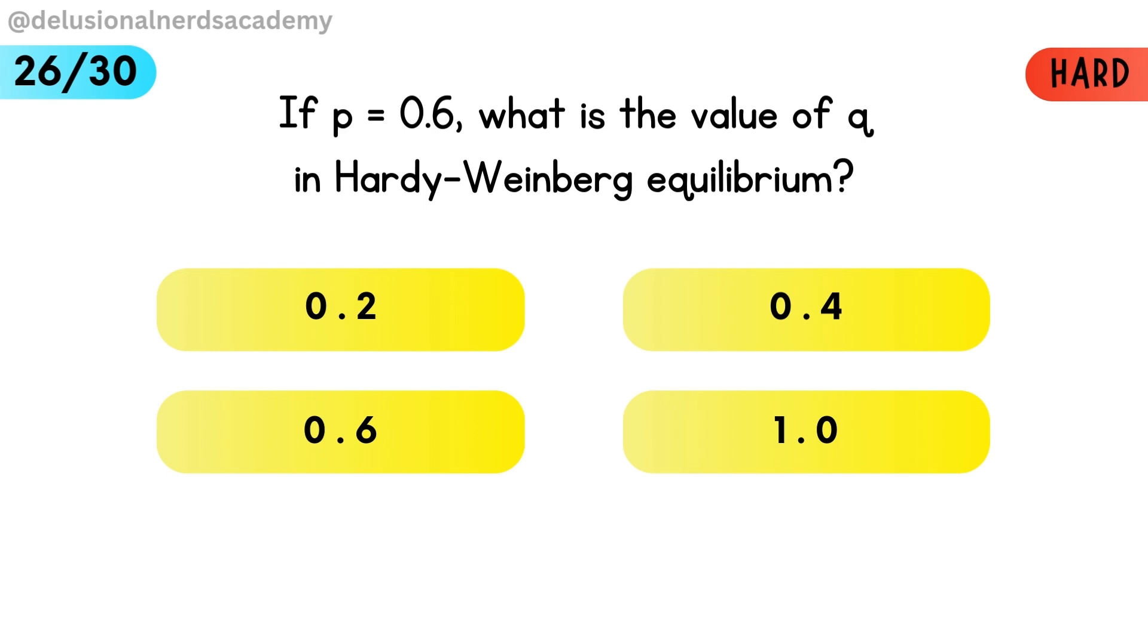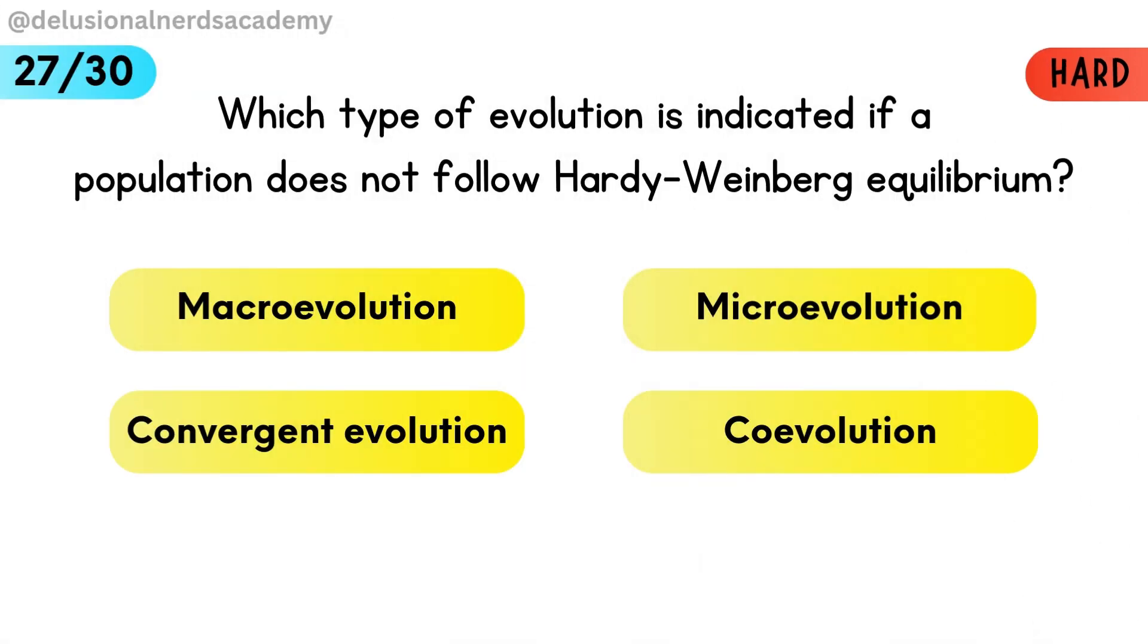If p is equal to 0.6, what is the value of q in Hardy-Weinberg equilibrium? If p is 0.6, then q must be 0.4 because p plus q is equal to 1. Which type of evolution is indicated if a population does not follow Hardy-Weinberg equilibrium? Deviation from Hardy-Weinberg equilibrium shows microevolution.